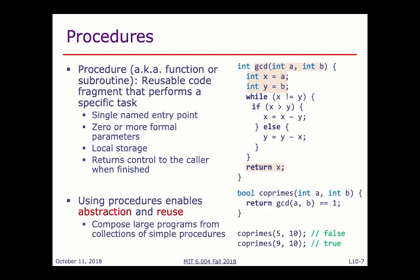Procedures are valuable for two reasons: we can abstract implementation details of particular algorithms and reuse them across many other procedures. For example, a 'coprimes' function that returns true if GCD(a, b) equals 1 can call GCD without the caller needing to know how GCD is implemented — we're essentially abstracting the implementation details.